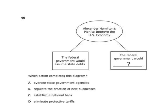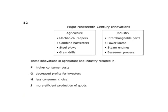Alexander Hamilton's plan to improve the U.S. economy: the federal government would assume state debts, and which action completes this diagram? The federal government would establish a national bank. Major 19th century innovations in agriculture included mechanical reapers, combine harvesters, and steel plows.